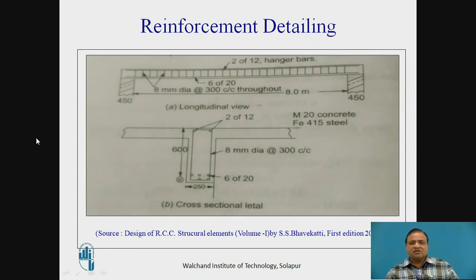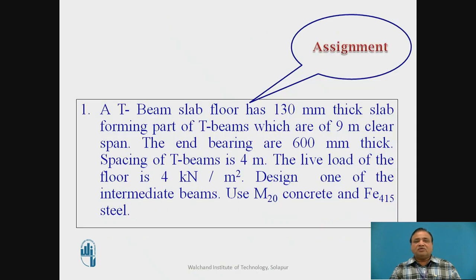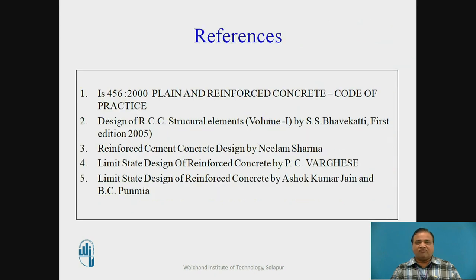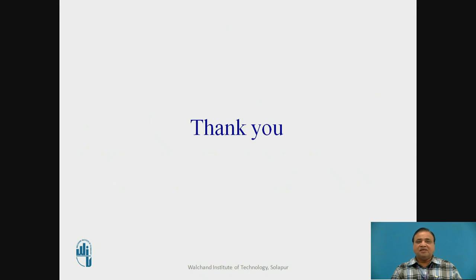This is the reinforcement sketch showing the top hanger bars 2-12 mm Tor and the bottom bars main reinforcement. 6 bars are there, therefore we have provided in 2 layers, and this is the cross section. This is an assignment for you. You please note down the assignment for further calculation. It has flange thickness 130, 9 meter clear span, bearing 600 mm, 4 kN per m² load, M20 and Fe415 steel is used. These are references used for this particular display. Thank you.